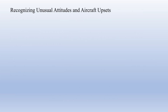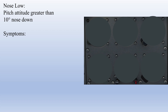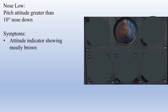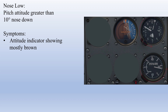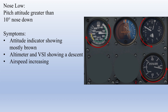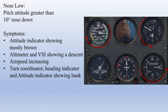The first step in recovering from an unusual attitude or upset event is recognizing that you're in one in the first place, and recognizing what kind of unusual attitude you're in. Unusual attitudes come in two different varieties: nose high and nose low. The symptoms and risks for each type are unique. A nose low attitude is one in which your pitch attitude is greater than 10 degrees nose down. The symptoms of this include your attitude indicator displaying mostly brown, indicating a nose low attitude, both your altimeter and VSI indicating a dive or loss of altitude, and your airspeed indicator showing a sometimes rapid rise in airspeed. You can also use your turn coordinator and heading indicator to determine the direction of the bank.